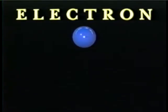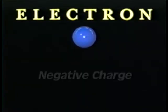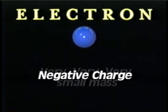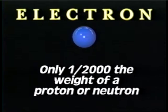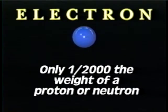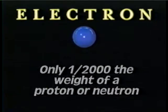Circling in varying orbits around the atom are electrons. These are negatively charged particles with very, very, very small mass. They make up only one two-thousandth of the weight of either a proton or neutron.